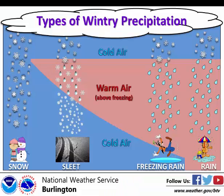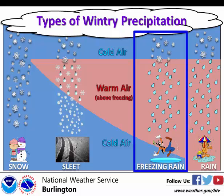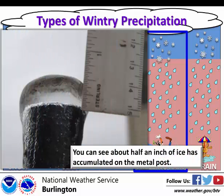We've seen that ice can be dangerous, bringing down trees and power lines, but how does it form? Ice at the surface forms from freezing rain, where cold ice crystals or snowflakes fall through a layer of warm air that melts them into liquid form, but as it continues to fall to the surface, the air temperature goes below freezing again, and the water lands on frozen surfaces, freezing upon contact.